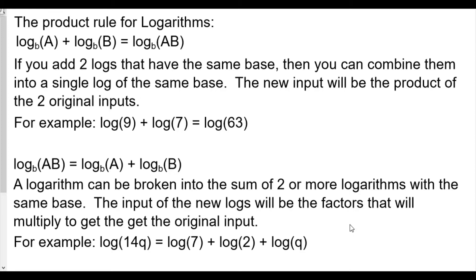We can take two logs at the same base that are adding and combine them into a single log by multiplying the insides. The product rule also works in reverse: log base b of (a times b) equals log base b of a plus log base b of b. For example, log of 14q can be written as log of 7 plus log of 2 plus log of q.